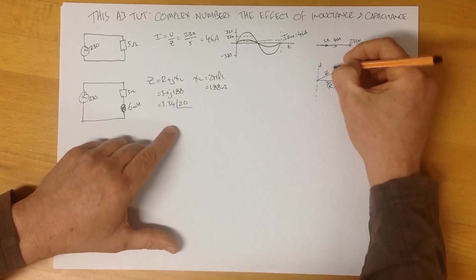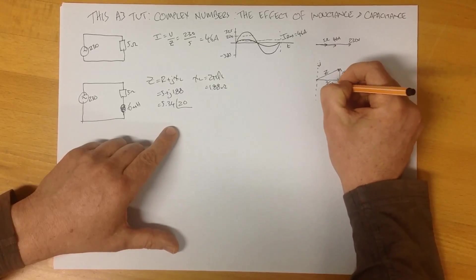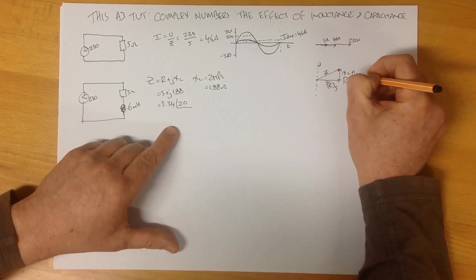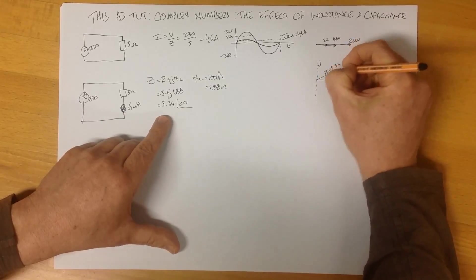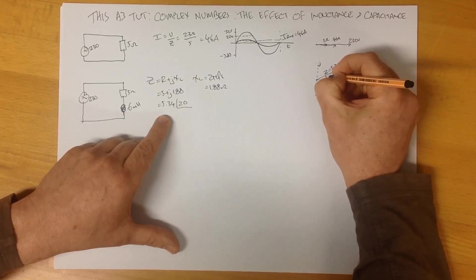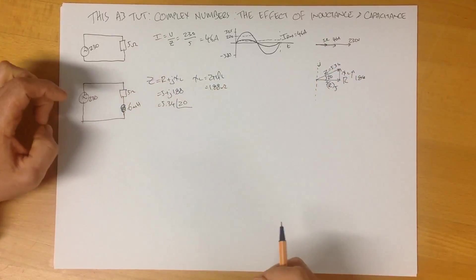Over to here, so we have, if this is our 5 and our 1.88, it's telling us that our total impedance is 5.34, and this angle in here is 20 degrees. So this is our impedance.